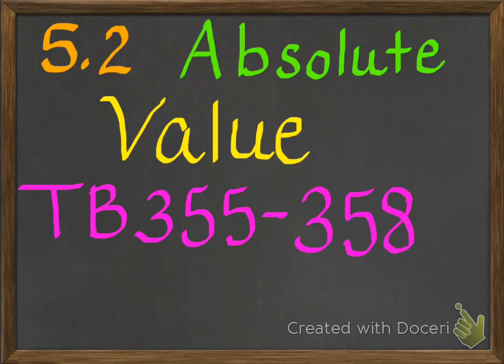Hello and welcome to chapter 5, section 2. This should be in volume 1 of your textbook series. This is on absolute value, which we're going to be talking about today, and it starts on textbook page 355 and goes through textbook page 358.